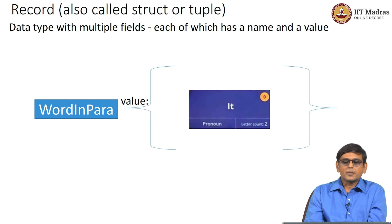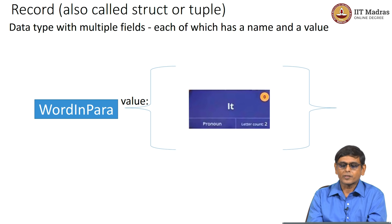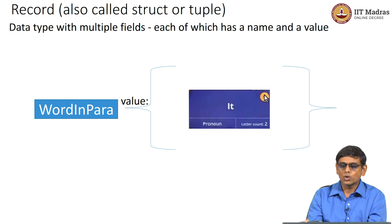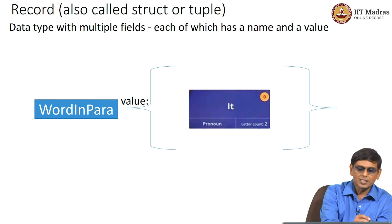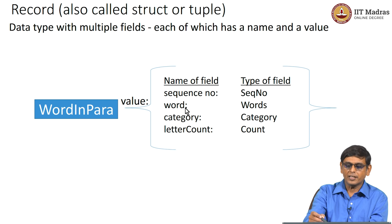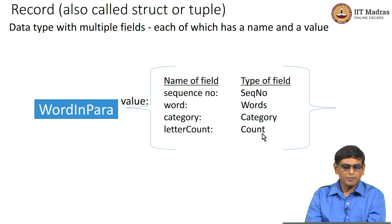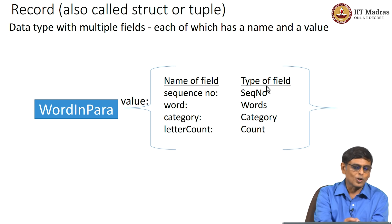Now let us look at the second data type — the words in the paragraph. For example, we had the word 'it', which is a pronoun; it had two letters and sequence number 0. There are clearly 4 fields in this data type — this is a record with 4 fields. Sequence number is of the sequence number type, the word is of the words data type, the category (pronoun, proposition, and so on) is of the category data type, and the letter count is of a count data type. We have already defined the subtypes needed for writing the data type for all the fields in this card.